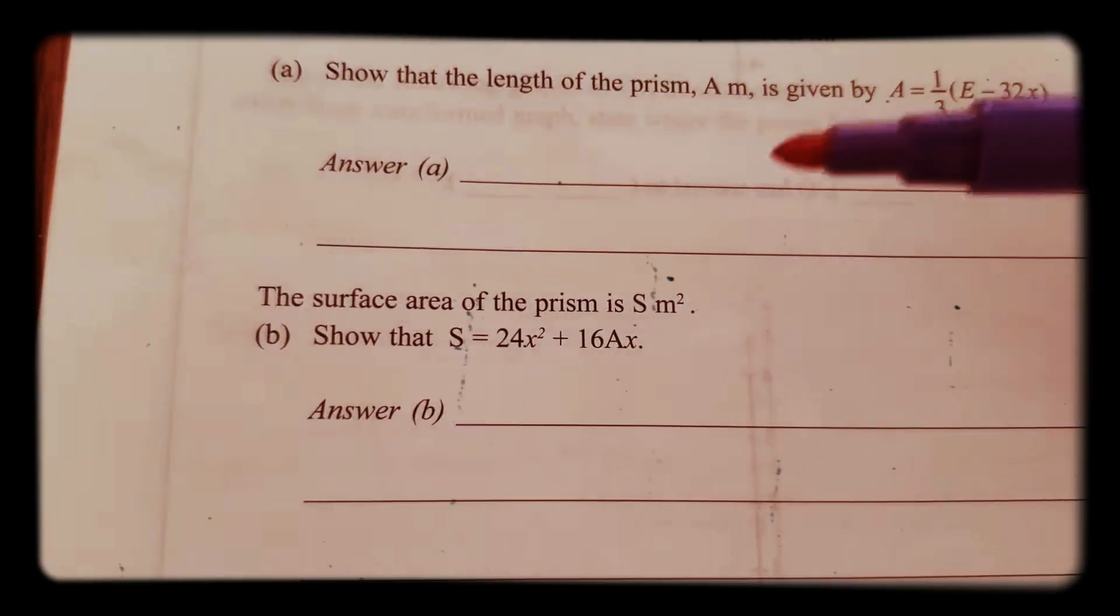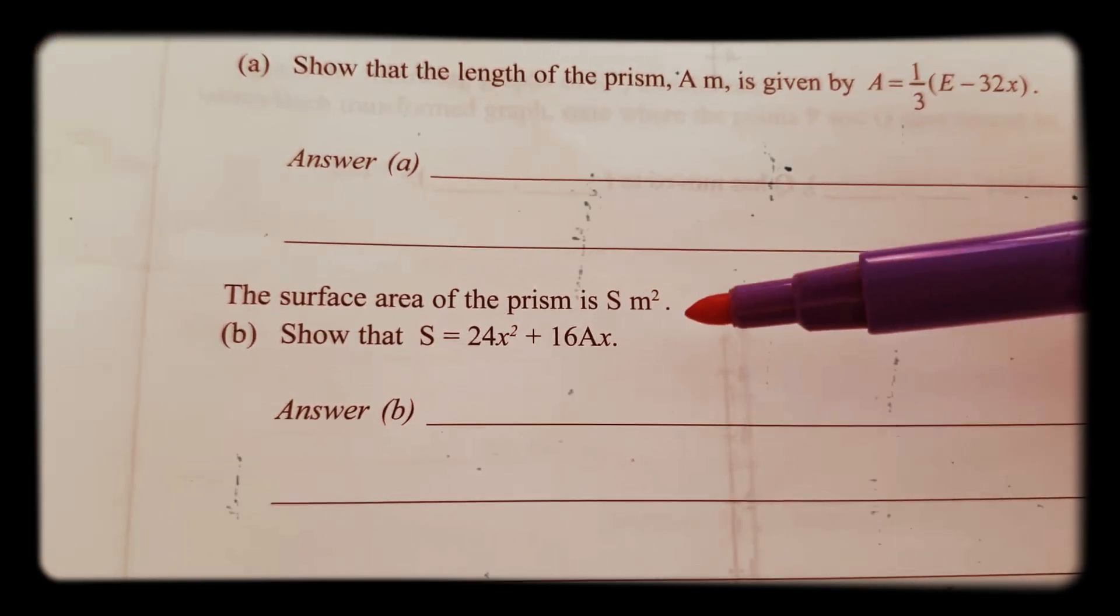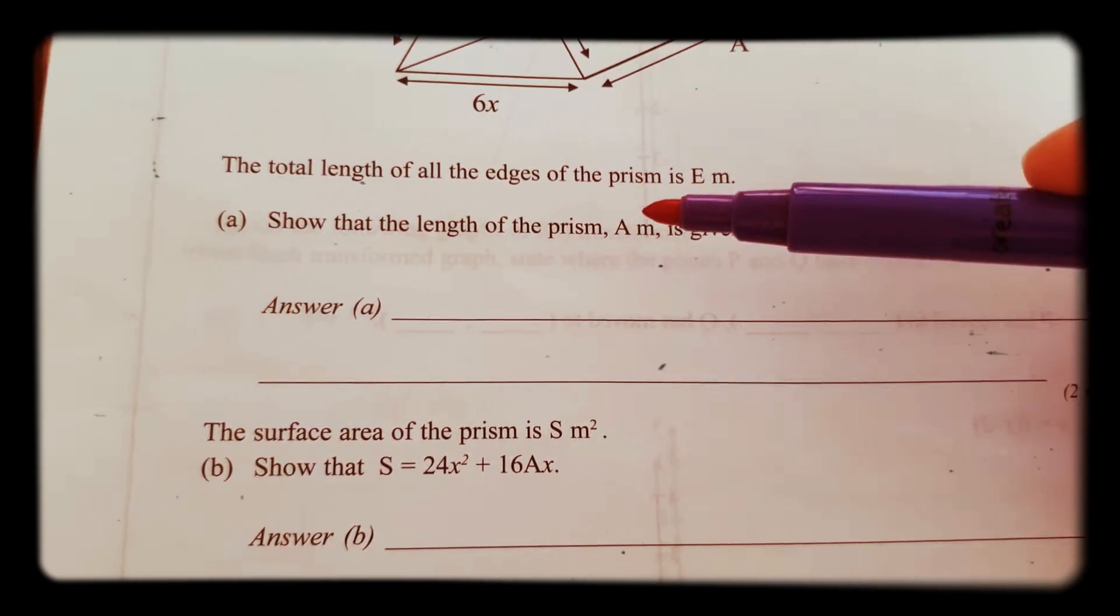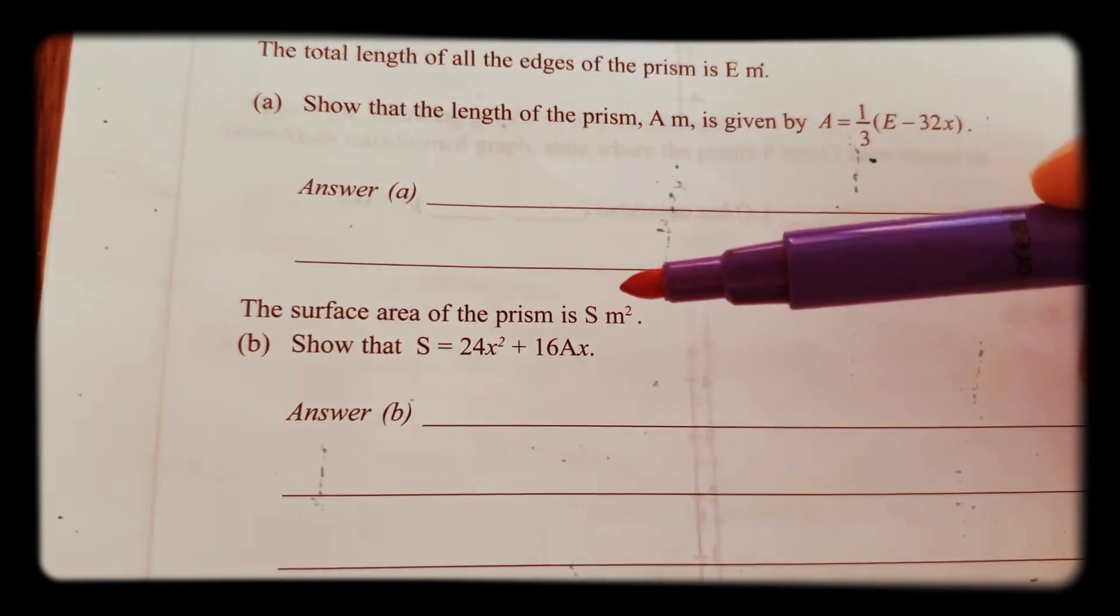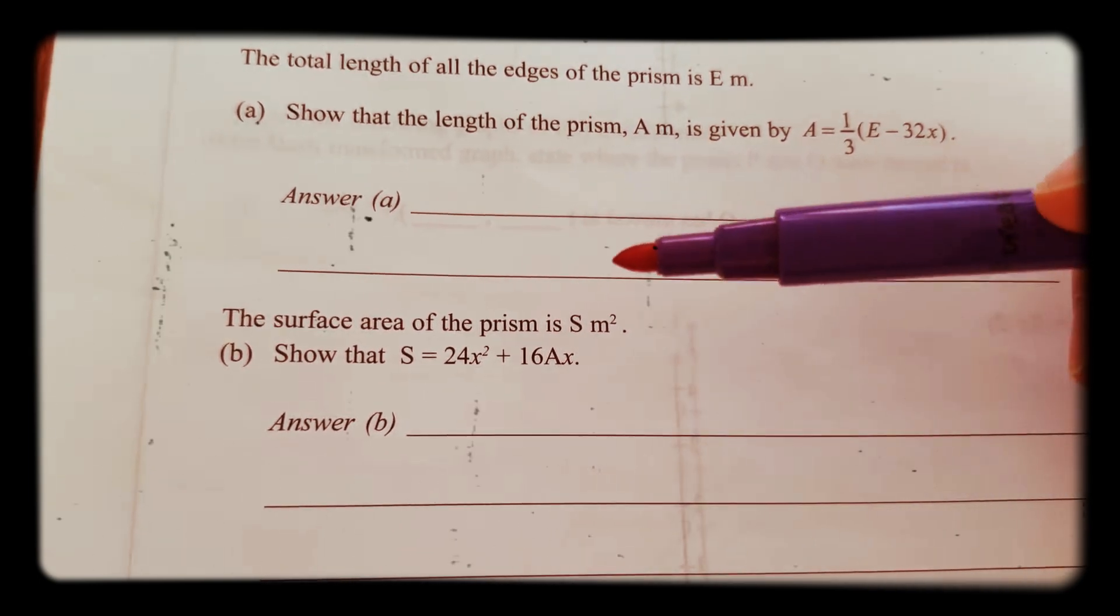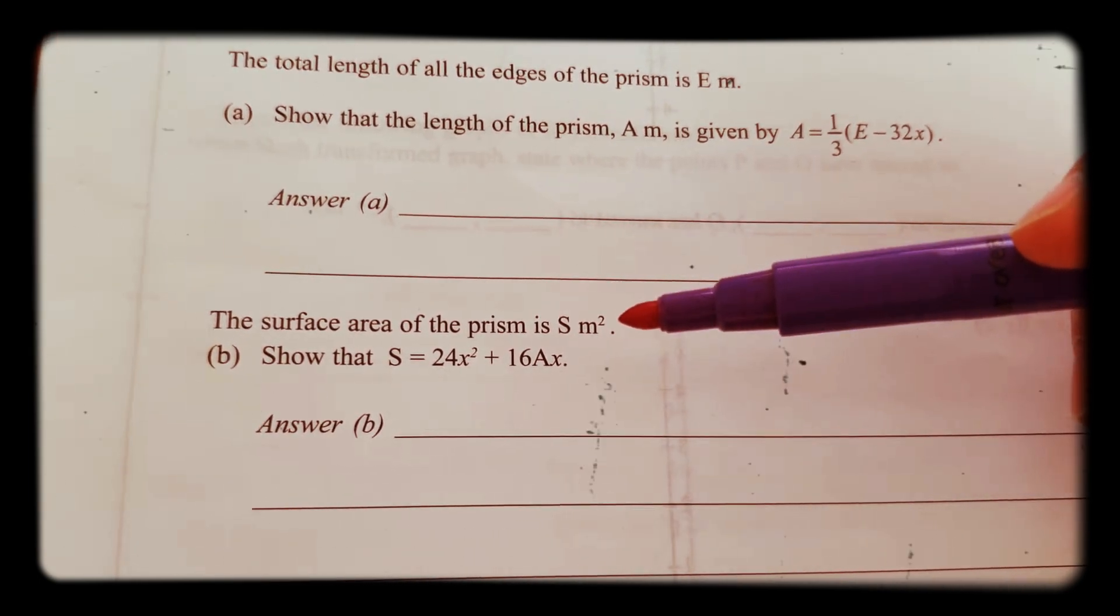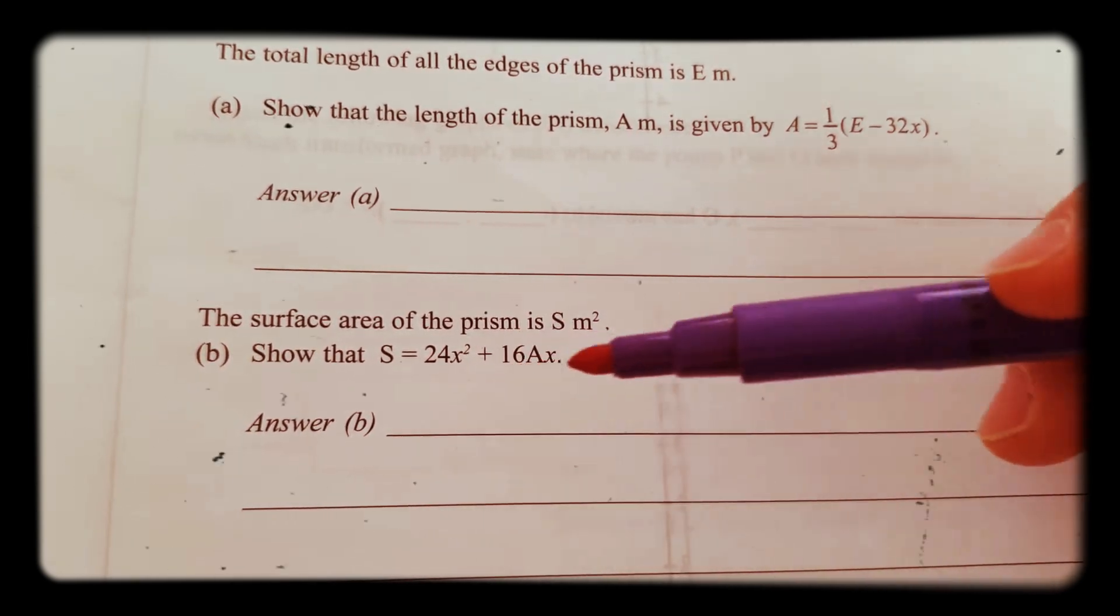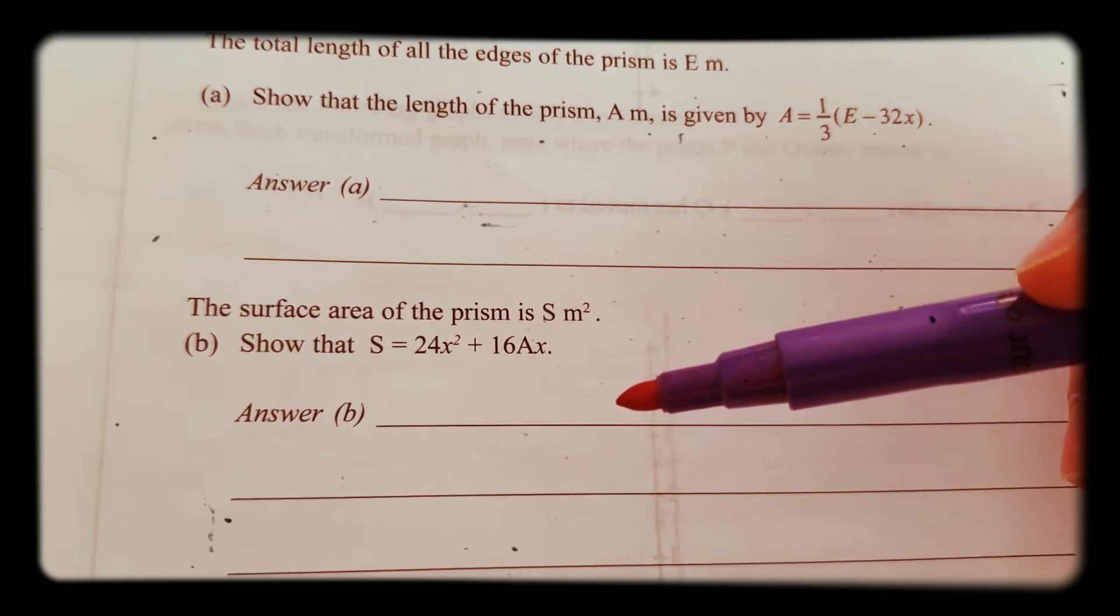In this video we're going to be looking at this exam question which continues from the question we did in the previous video. This one is asking that the surface area of the prism is S meter squared. Show that S equals 24x squared plus 16Ax.